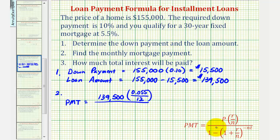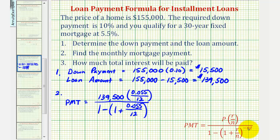The formula's denominator is 1 minus the quantity (1 plus R divided by N), which is 0.055 divided by 12, raised to the power of negative N times T, which is negative 12 times T. T is time in years, and since this is a 30-year fixed mortgage, T is 30. Now we'll go to the calculator.